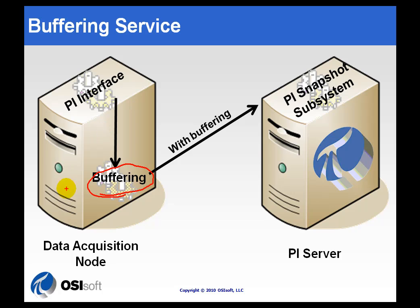The interface doesn't really even know that this is happening. All the interface does is start to try to send data, but if the Buffering Subsystem is there first, then it's going to intercept that data and just pass it on to the PI Server.